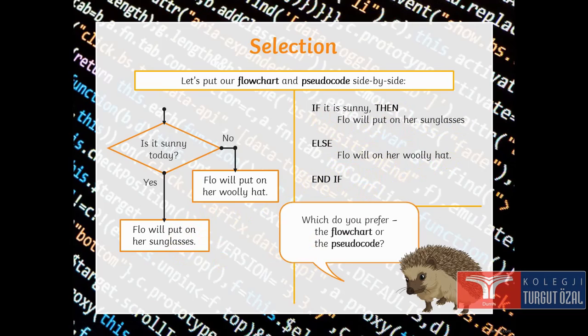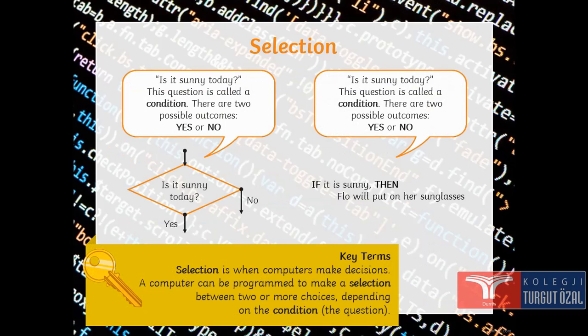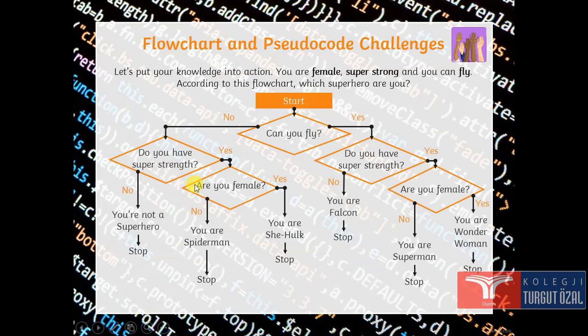Which do you prefer? Flow chart or pseudo-code thing? And tell me. It is sunny today? This question is called a condition. There are two possible outcomes. Yes or no? It is sunny today? If yes, what happens? If no, what happens? Selection is when computers make decisions. A computer can be programmed to make a selection between two or more choices depending on the condition, on the question here.